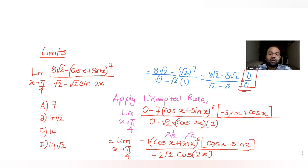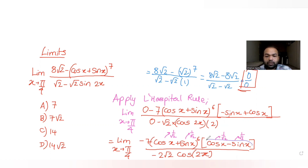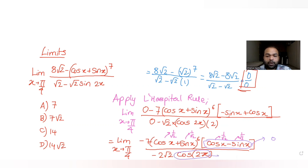However, (cos x − sin x) at x = π/4 gives 1/√2 − 1/√2 = 0, making the numerator zero. In the denominator, cos(2·π/4) = cos(π/2) = 0 as well. So both numerator and denominator are again 0, giving us another 0/0 indeterminate form.